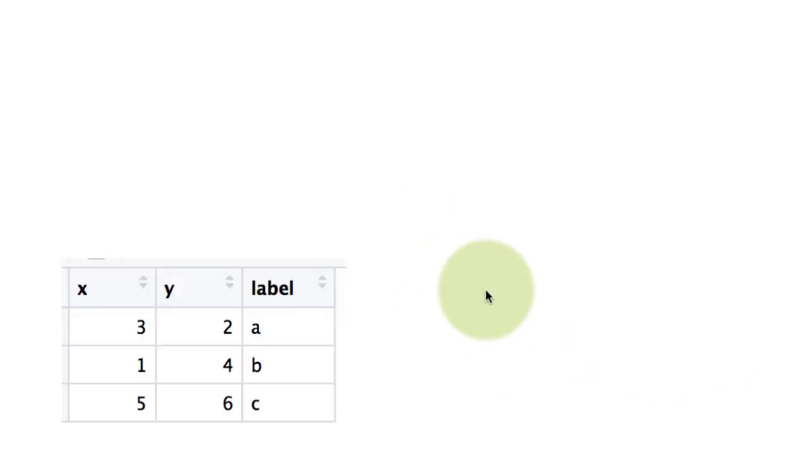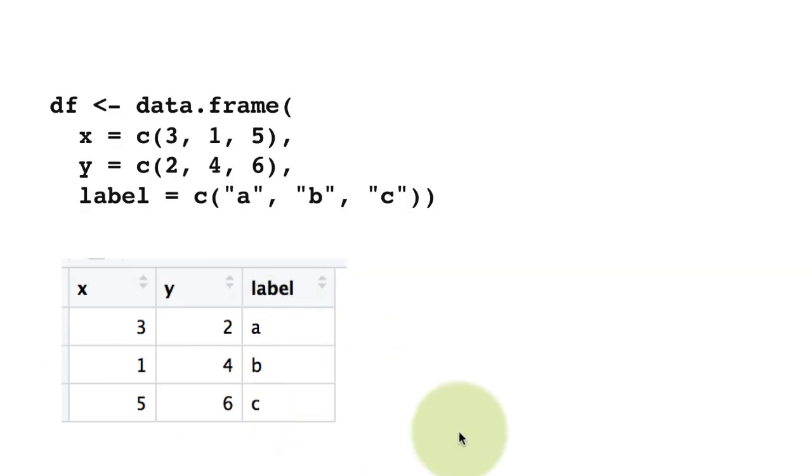For this example we'll consider this particular data set. This is a data frame that has two columns X and Y. The X values are 3, 1, 5 and the Y values are 2, 4, 6, and each row has a corresponding label. This is a data frame we created using the data.frame function. You use this if you want to create a data frame from scratch as opposed to reading it from a CSV file.